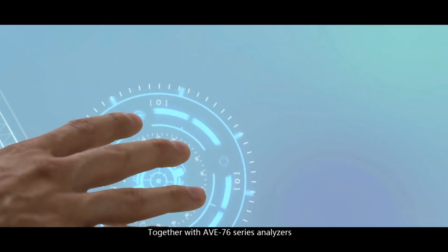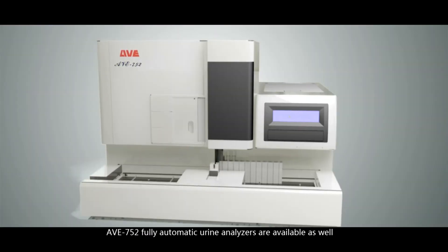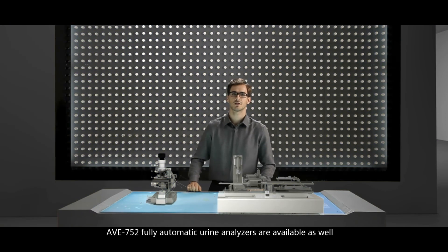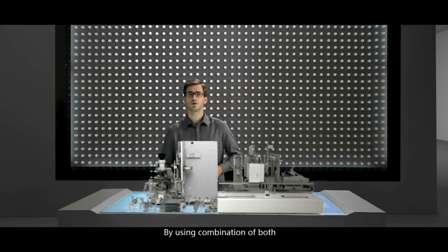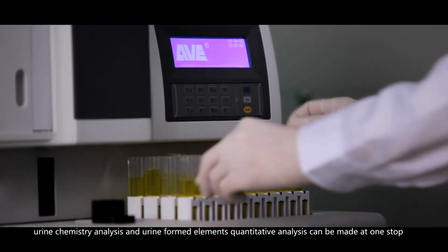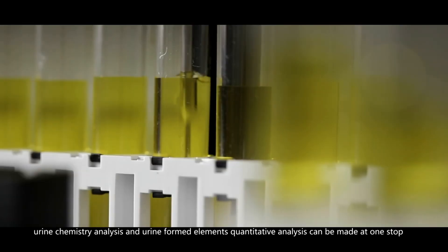Together with AVI-76 series analyzers, AVI-752 fully automatic urine analyzers are available as well. By using combination of both, urine chemistry analysis and urine formed elements quantitative analysis can be made at one stop.